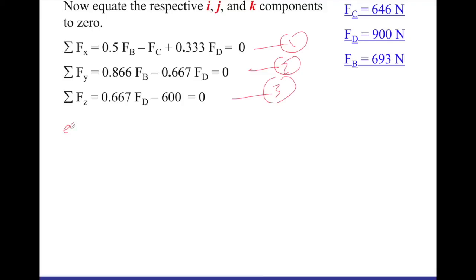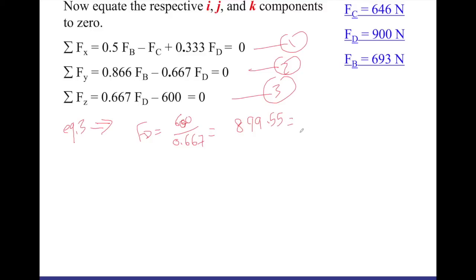From equation three, you move the 600 to the other side — that's positive. So 0.667·FD = 600. You divide both sides by 0.667, and FD equals 899.55. If you round to three significant figures, you round the five to six, and this becomes 900 Newtons. Don't forget your units in order to have your grade.